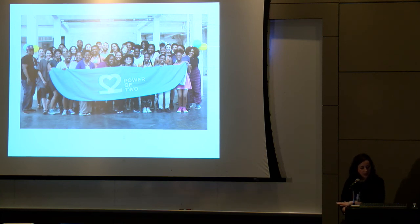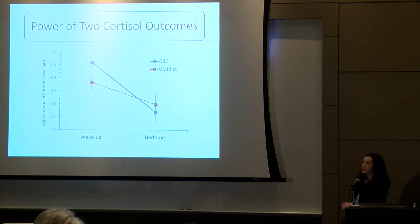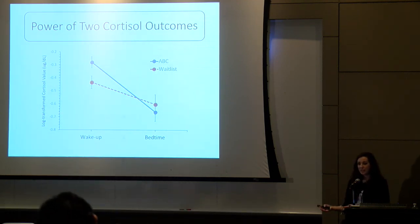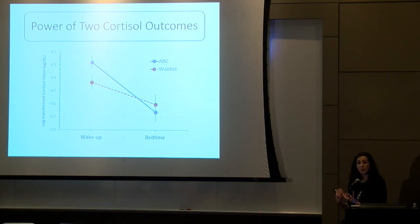I'll just highlight one outcome that we're seeing so far in an RCT there, which is looking at cortisol outcomes. Even in this dissemination effort with coaches hired from the community, some graduates of the ABC program themselves, we still see this enhanced cortisol regulation following the intervention. This suggests that we might be able to disseminate this and scale it and still see high effectiveness in the communities we care about.